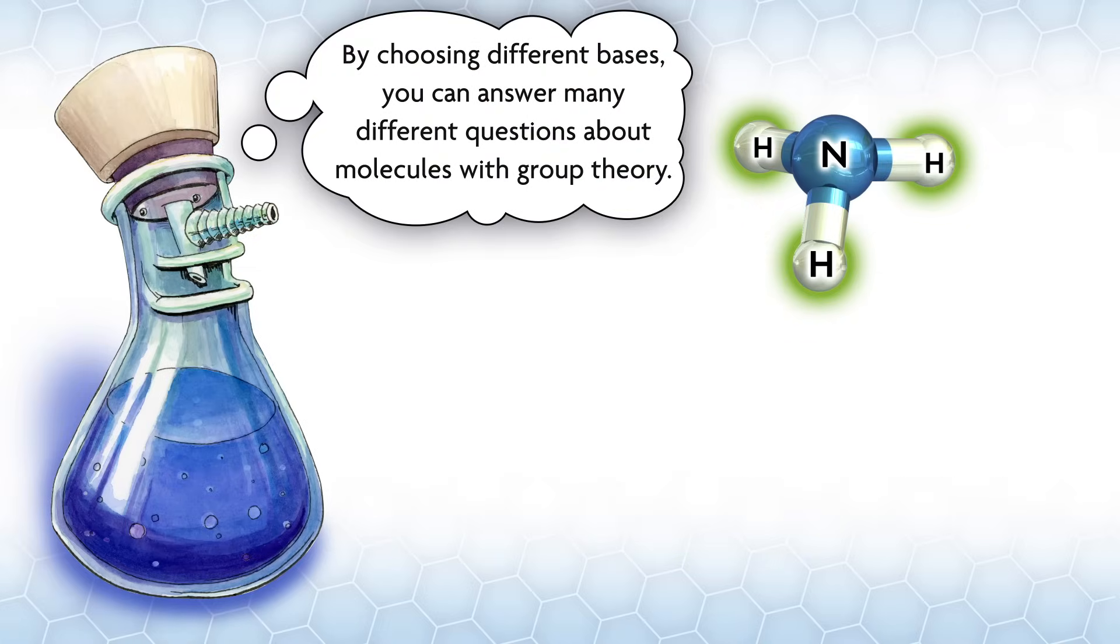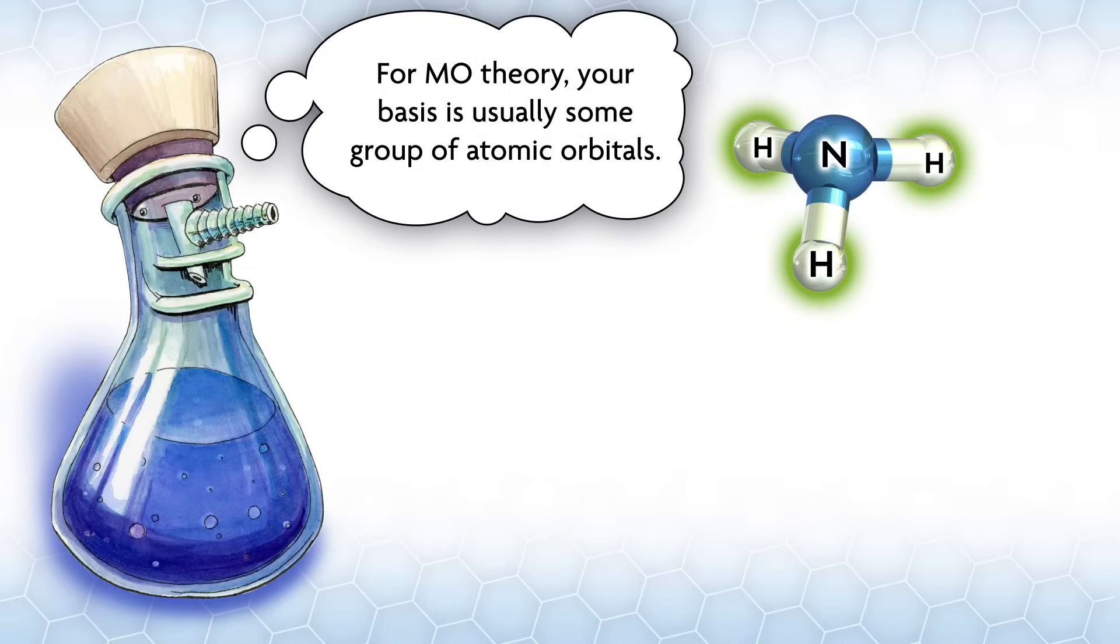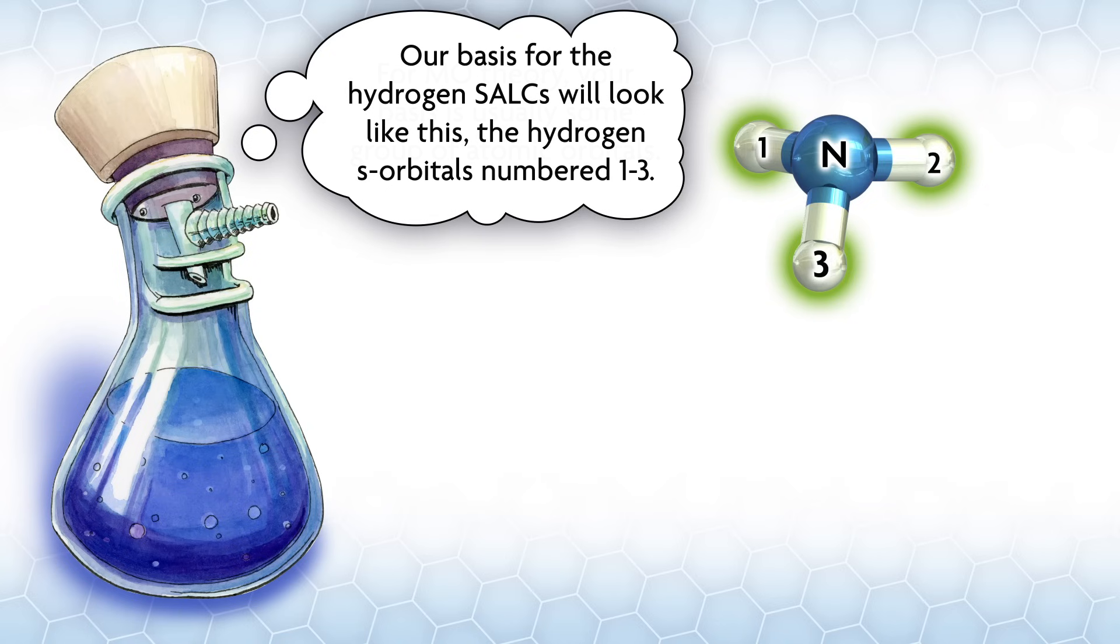Since they are hydrogens, they have one valence s orbital each. We will use these valence s orbitals as a basis to find the SALCs. Basically, we will combine the s orbitals on hydrogen to get representations of correct symmetry to overlap with the atomic orbitals on nitrogen.